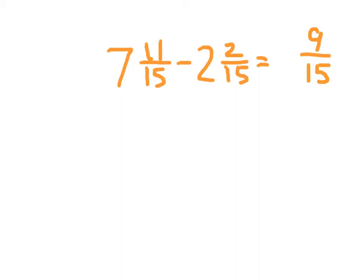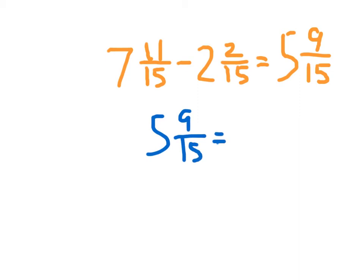We put that together as a mixed number, then look at the whole portions: seven minus two is five. So we have five and nine-fifteenths. We need to write that in simplest form, remembering to keep the whole number. Dividing the numerator and denominator by three gives us three-fifths. Five and nine-fifteenths equals five and three-fifths.